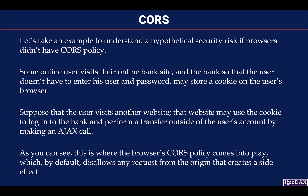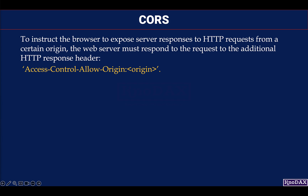As you can see, this is where the browser's CORS policy comes into play, which by default disallows any request from an origin that creates a side effect. To instruct the browser to expose server responses to HTTP requests from a certain origin, the web server must respond with an additional HTTP response header: Access-Control-Allow-Origin, with the origin as its value.